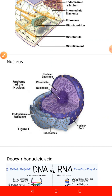Generally, the nucleus is located in the center of the cell and is most spherical in shape. In terms of structure, it has a nuclear envelope, nucleoplasm, chromatin, and a nucleolus.